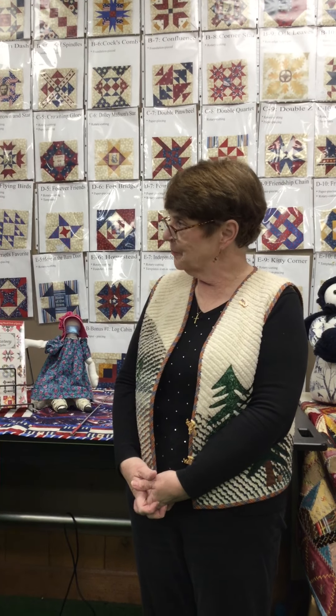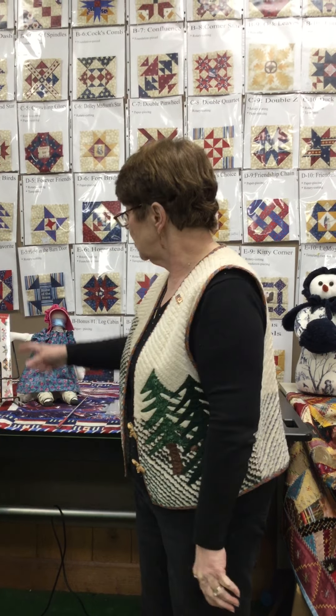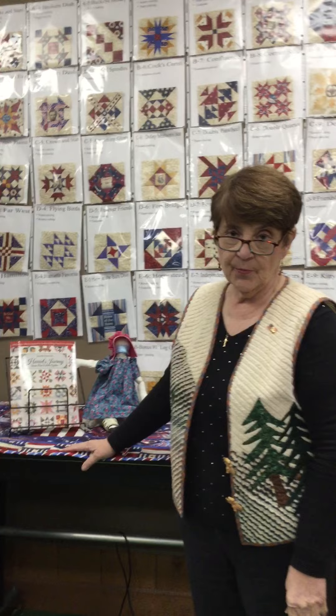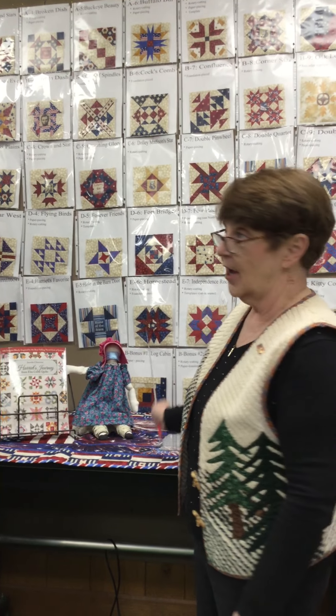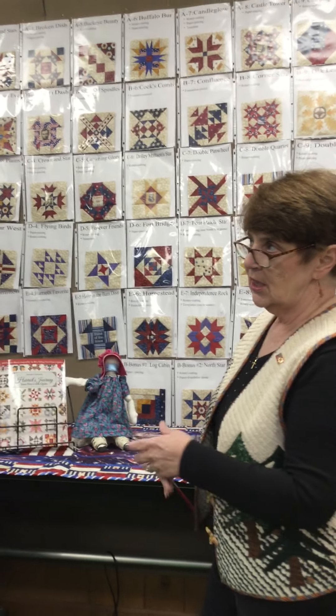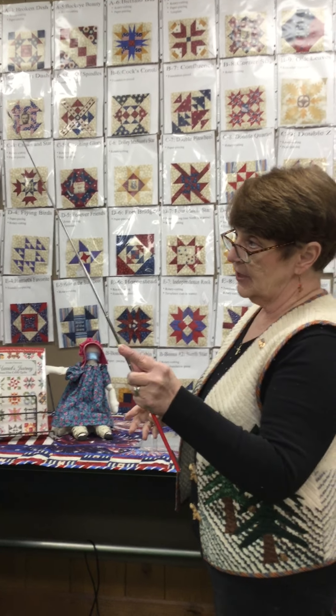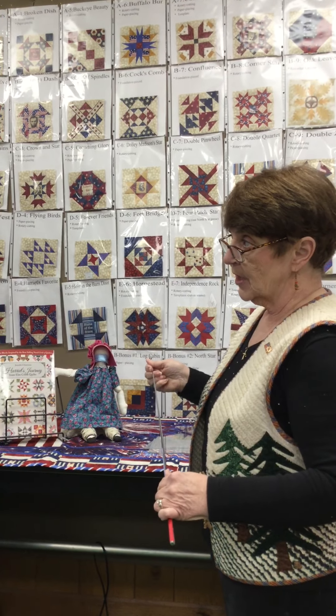Welcome to our freezy January day here at the Calvert quilt shop. This month we are starting month number seven of our Block of the Month for this year, which is Harriet's Journey from Elm Creek Quilts. Each month we've been doing ten different blocks and we're on Row F this month, so we have ten different blocks.